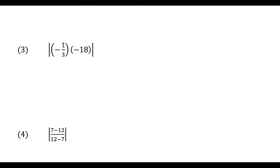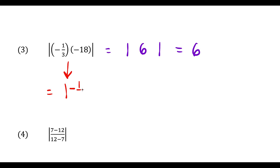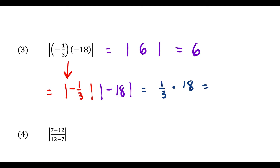For question three, the easiest way is to simplify the inside first: negative one-third times negative eighteen is positive six, and the absolute value of positive six is six. But another way to show the properties is to break it up as the absolute value of negative one-third times the absolute value of negative eighteen. The absolute value of negative one-third is one-third, and the absolute value of negative eighteen is eighteen, and eighteen divided by three also gives us six.